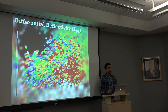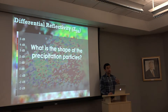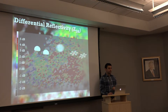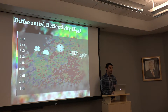Moving ahead to differential reflectivity — to go through it one more time: what are we talking about regarding the shape of precipitation particles? Are they wider than they are tall, or taller than they are wide? With larger raindrops, they are wider than they are tall, which gives us higher differential reflectivity — the same with melting hail or ice crystals. For this presentation, we want to focus on those larger raindrops.